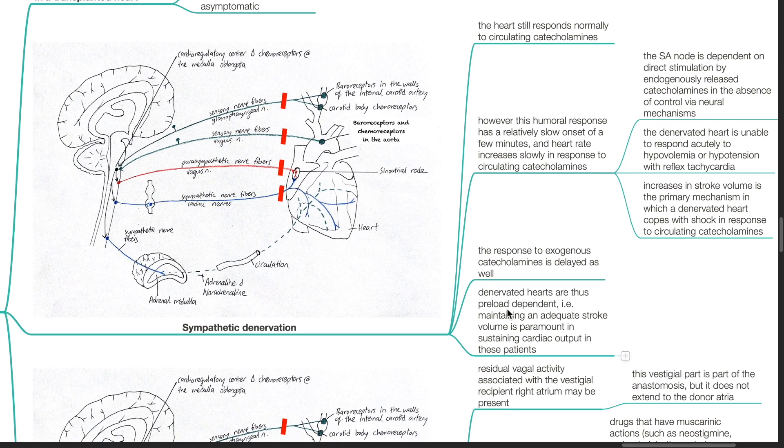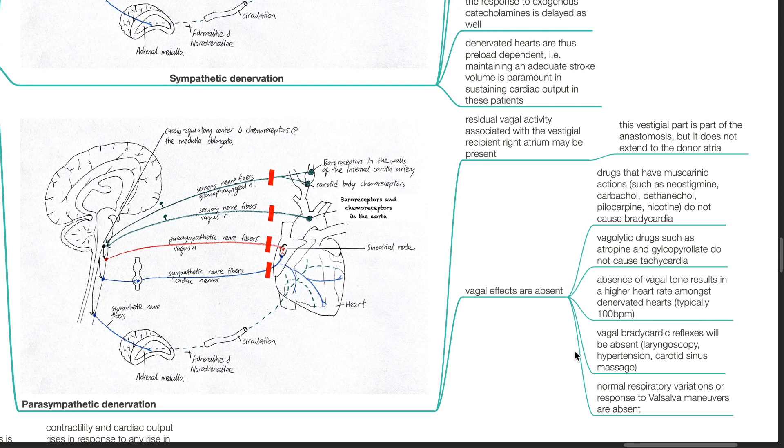Thus, denervated hearts are preload dependent, i.e., maintaining an adequate stroke volume is paramount in sustaining cardiac output in these patients.